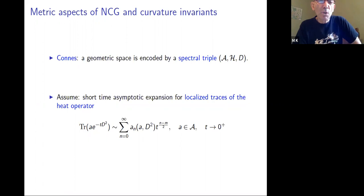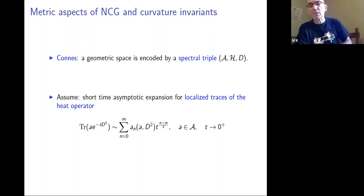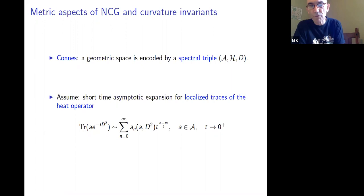We have to assume some sort of technical condition in order to move on. The assumption is that localized traces of heat operators — so for any element of the algebra or smooth part of the algebra — these traces of the heat operator times A have some asymptotic expansion near zero. It's a short-time asymptotic expansion.